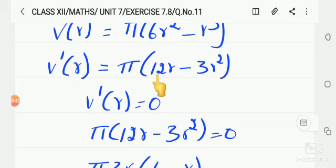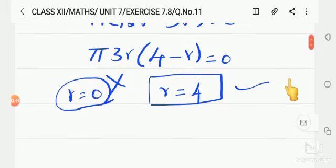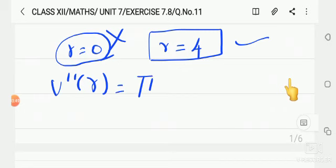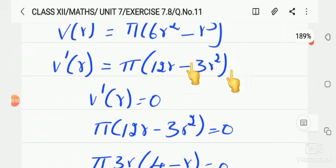v double dash of r which is equal to pi into - when we differentiate r we get 1 - so 12 minus 6r.